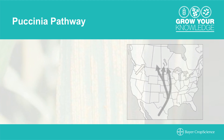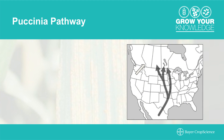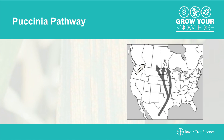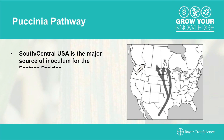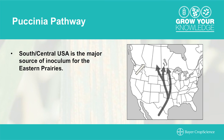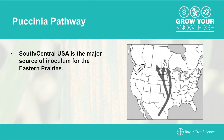So we totally rely on inoculum transport from the United States up into Western Canada for infections. In the case of stem and leaf rust, this inoculum generates in the southern U.S. and is transported up on wind currents into the eastern prairies.